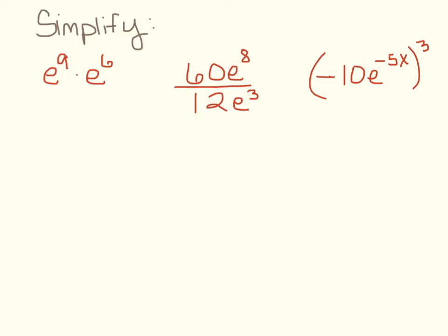So here's some examples. If we were to simplify E to the 9th times E to the 6th, it follows the same rules that exponents always follow, and that is that we add them. 9 and 6 is 15.